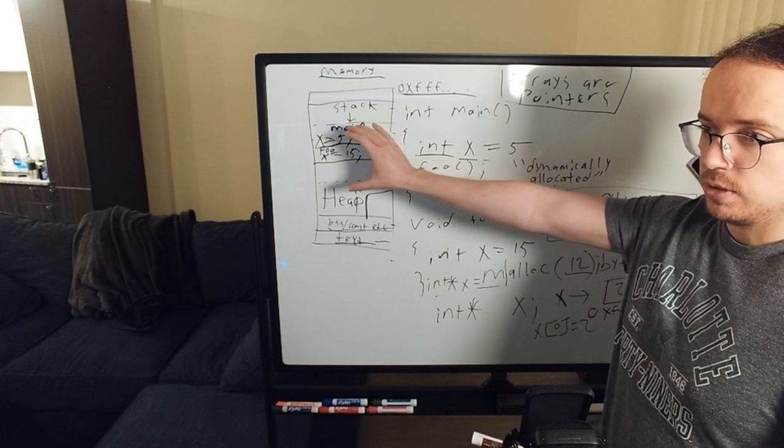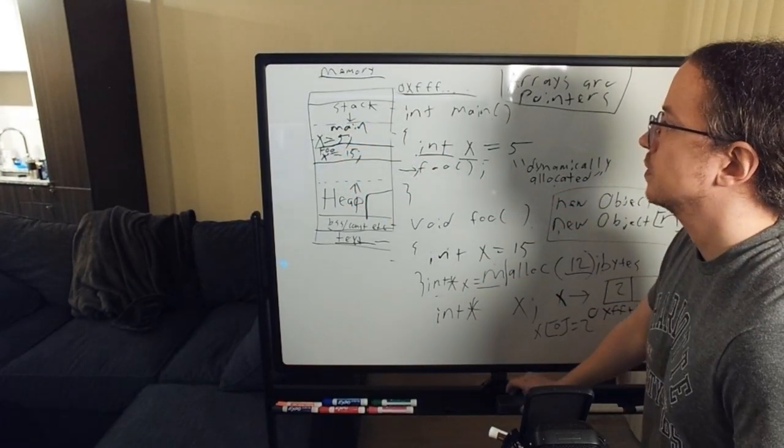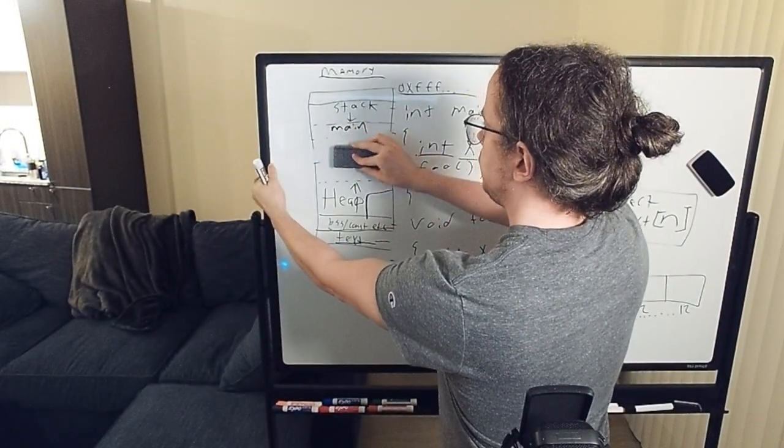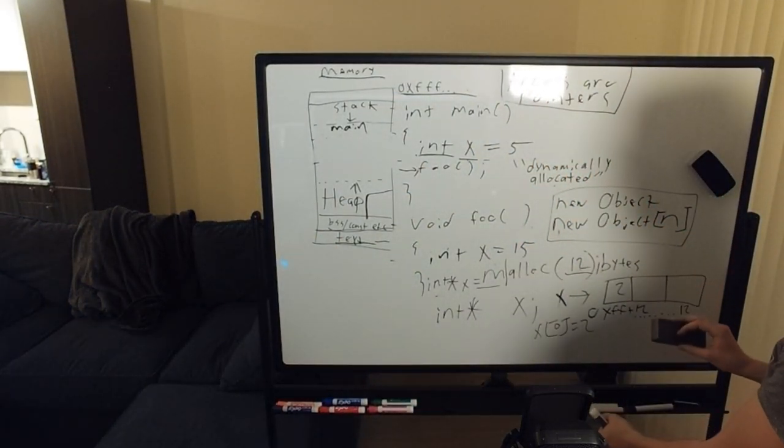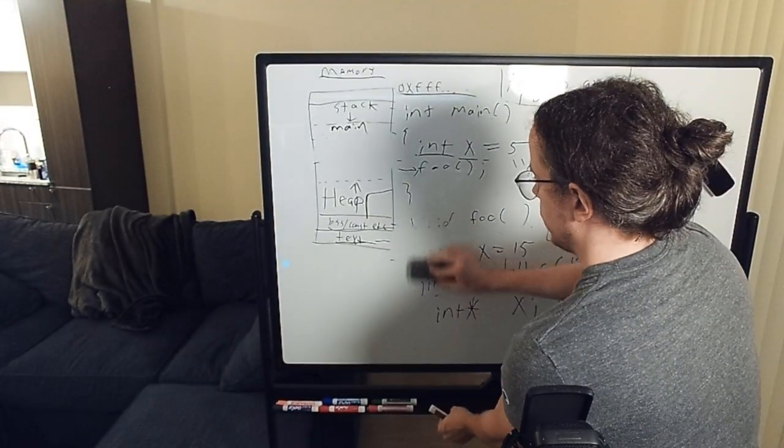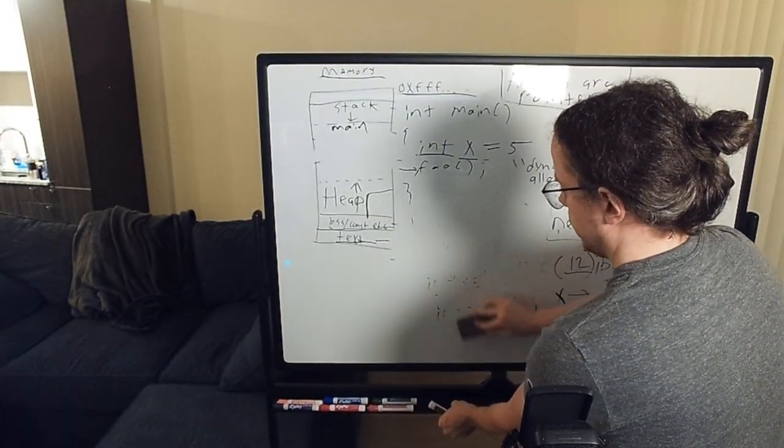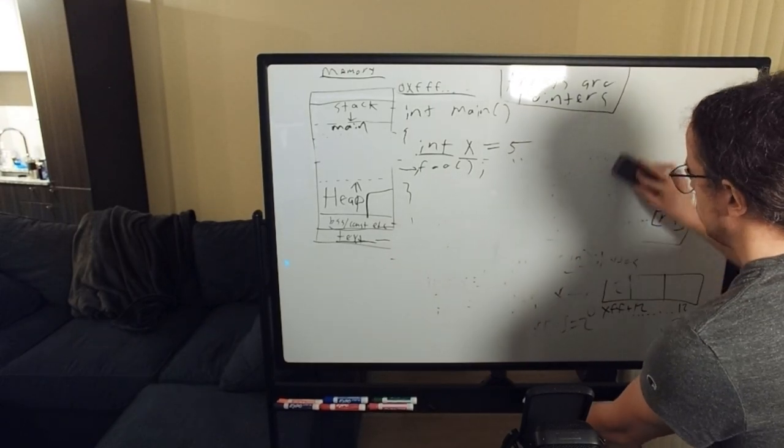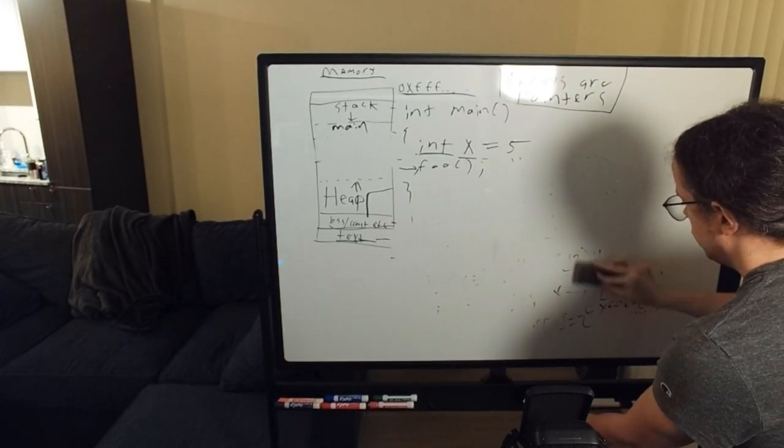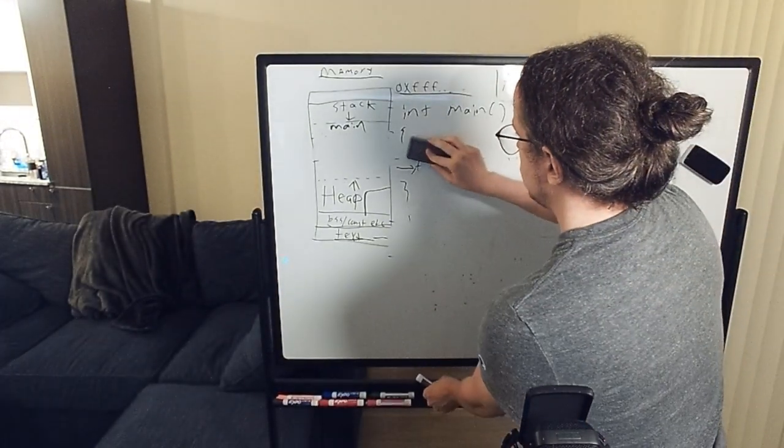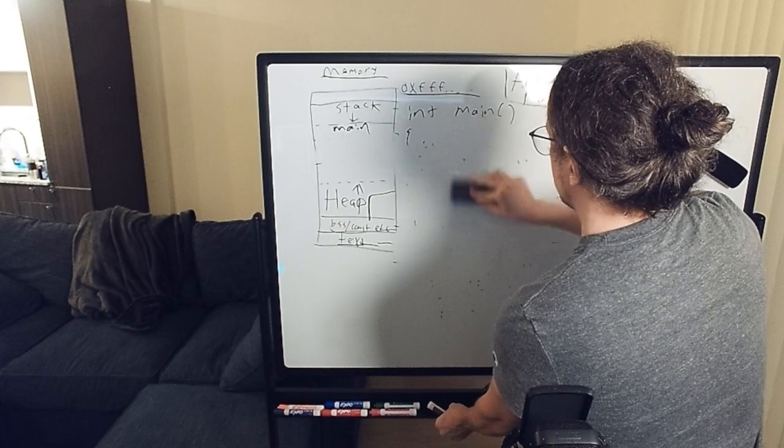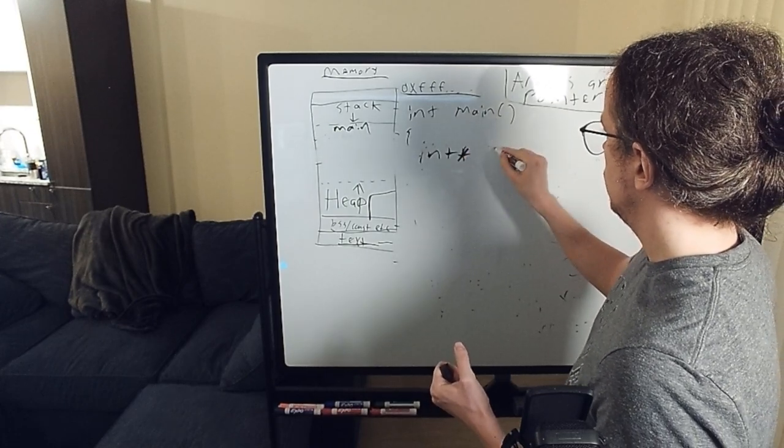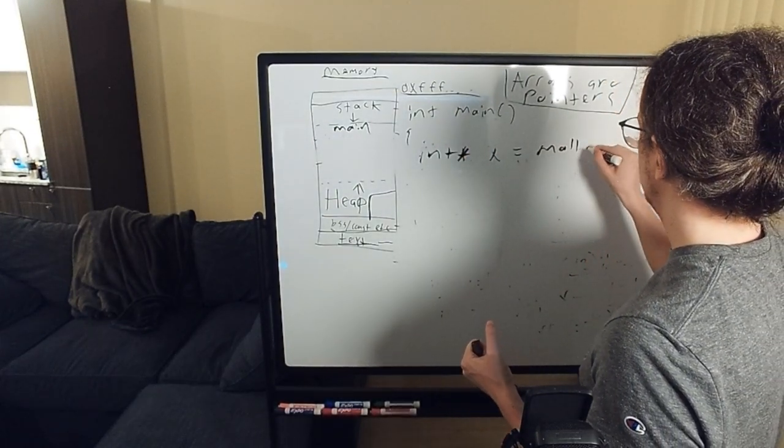And now I want to show you how this looks on the stack. So when we do this, let's just make some space here. Let's make some space here. Let's just correct some of this makes a lot of space so we have room to use what we need. So we make some space. We're going to edit our main function to show a slightly different example. So in main, let's say we do what we just did.